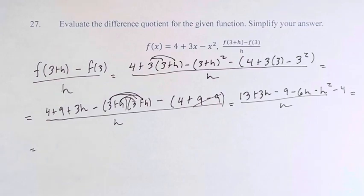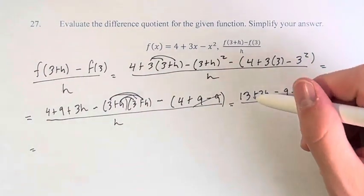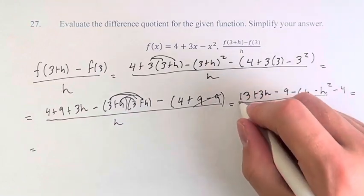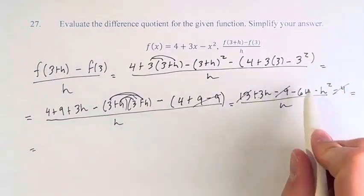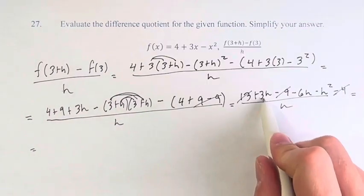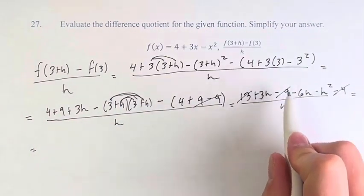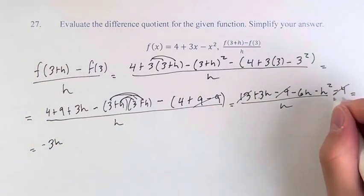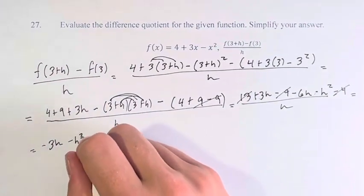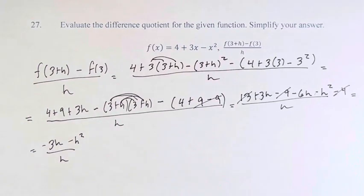What do we have next? We have 13 - 9 - 4 is 0, so these all cancel. Then we have 9h minus h². Or sorry, 3h - 6h is not 9h, it's 3 - 6, negative 3h, minus h², over h.